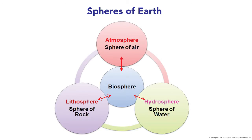There are different spheres of the environment — different spheres of the biosphere. The first one is the atmosphere, which is the sphere of air. The second is the hydrosphere, the sphere of water. The third is the lithosphere, the sphere of rock.